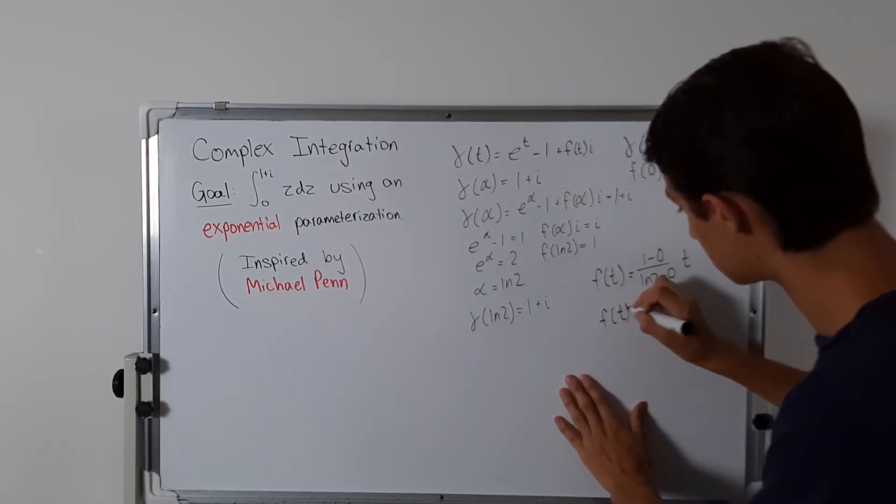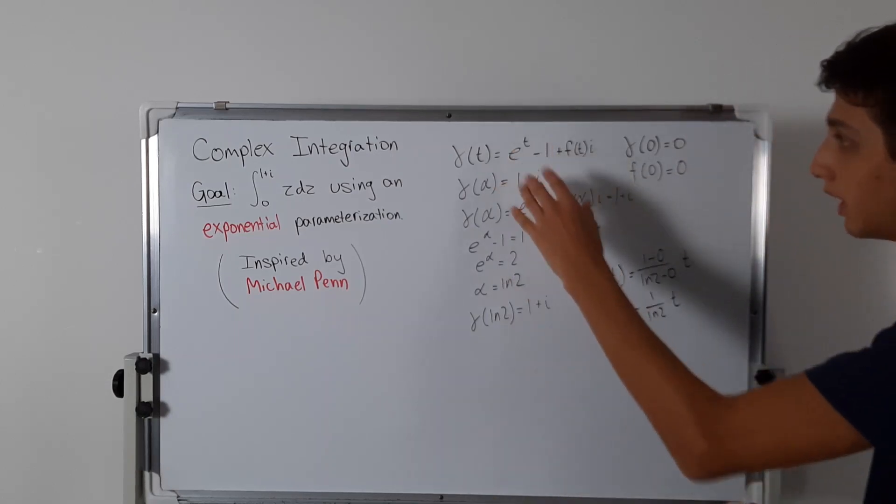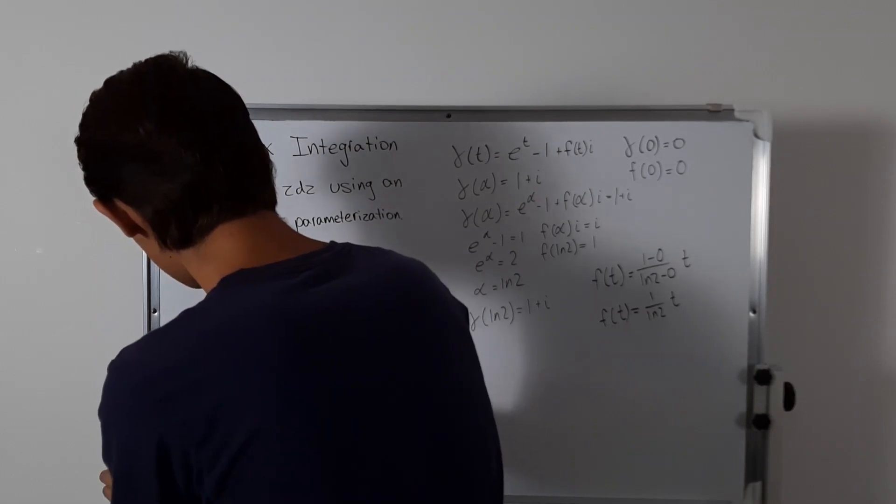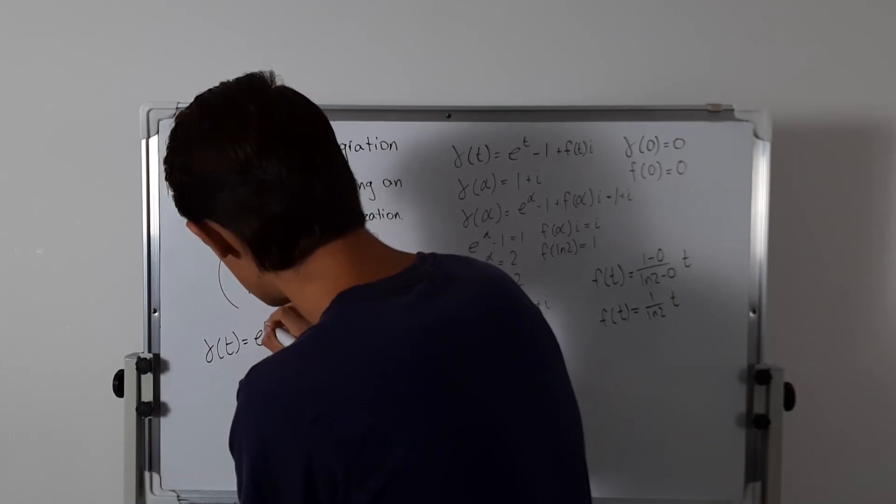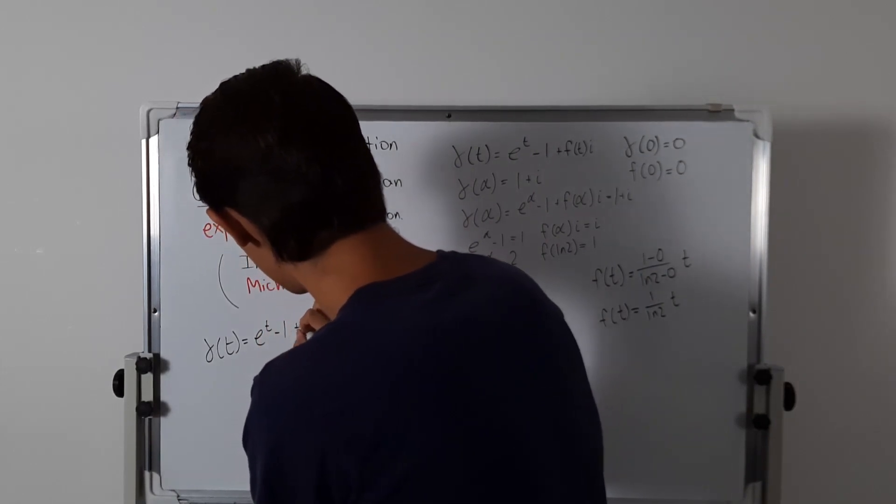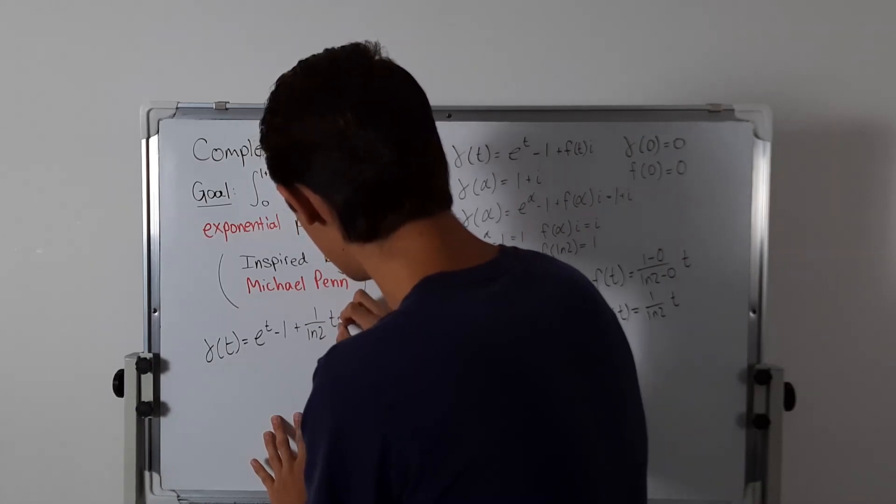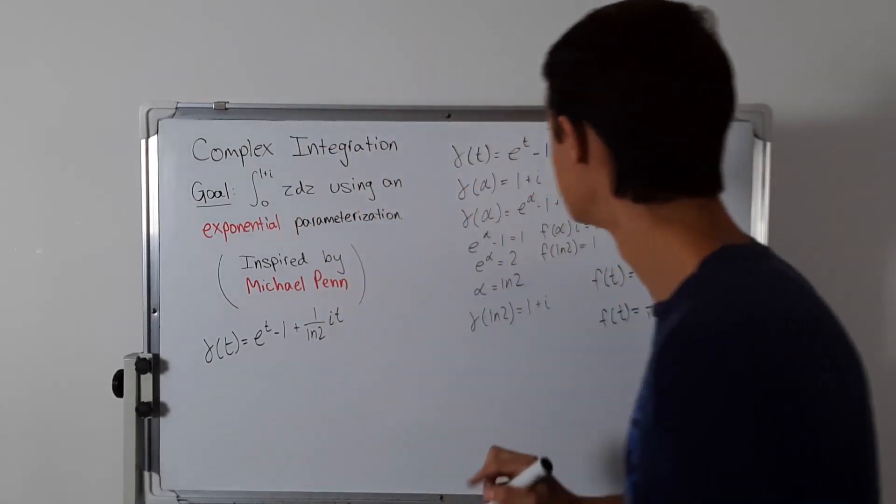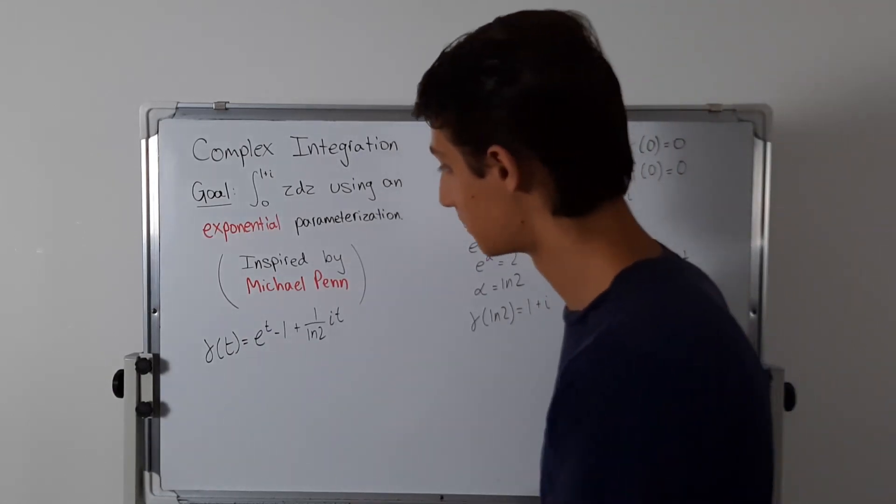That's actually not that difficult at all. So what we have in the end is that gamma of t equals e to the t minus 1, and then plus 1 over ln of 2 times t times i. That's our gamma of t.